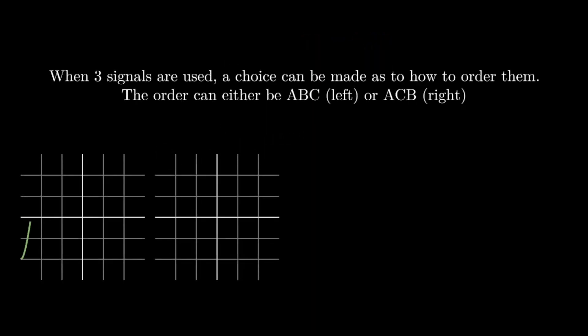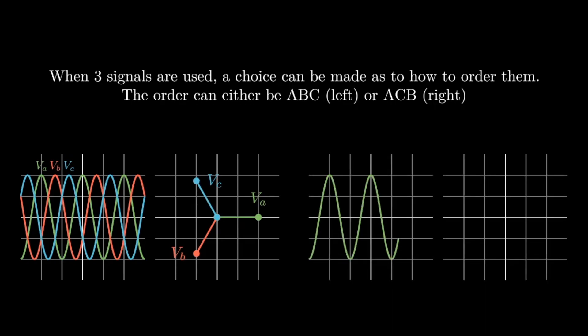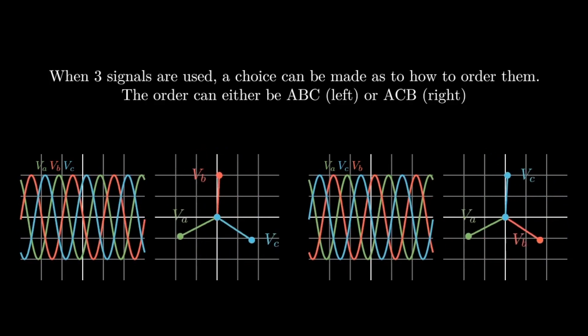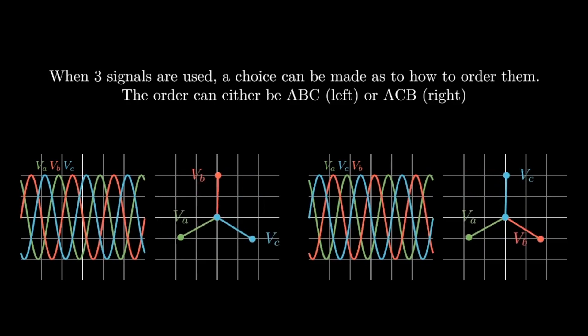Now for the three-phase case. With three phases, there is a choice of how to order the voltage waves. The order can either be green-red-blue, or ABC, as shown on the left, or green-blue-red, ACB, as shown on the right. These two options can be thought of as the reverse of each other, because moving backwards across the ABC waves gives the order ACB, and vice versa.